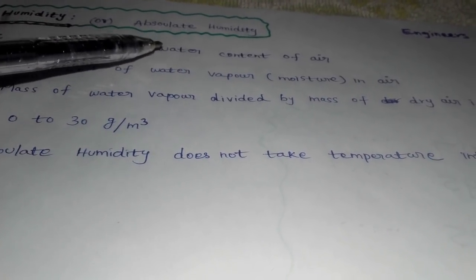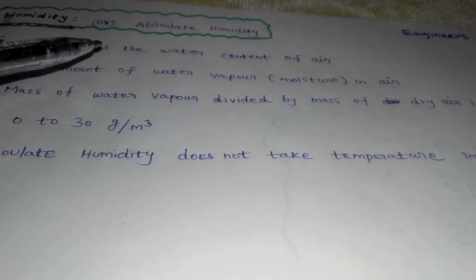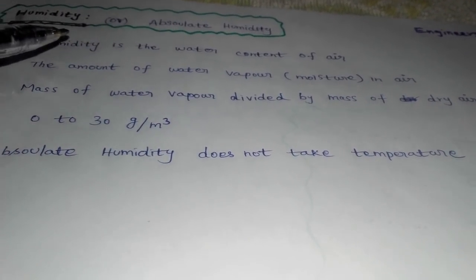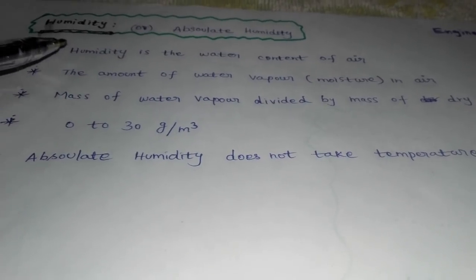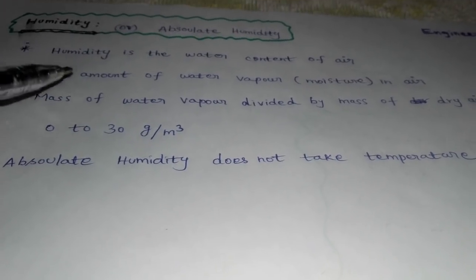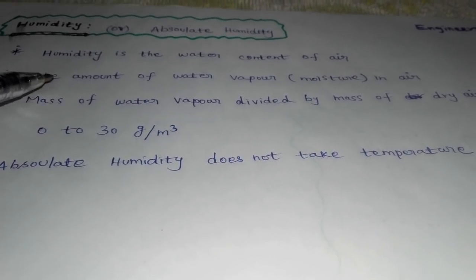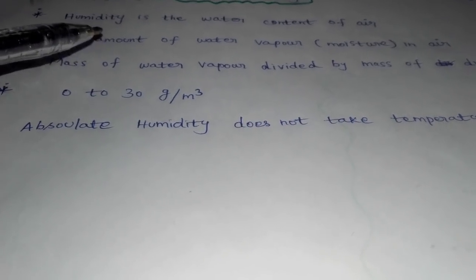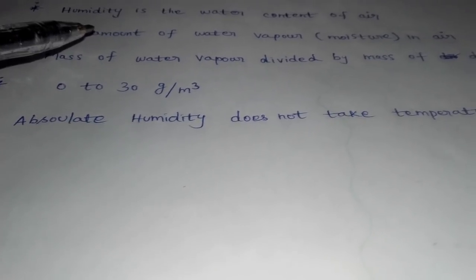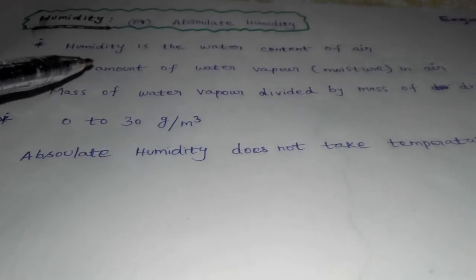Humidity is the water content of the air. That is water content of the air. Therefore, the air is the water content. Humidity is the amount of water vapor and moisture in the air.